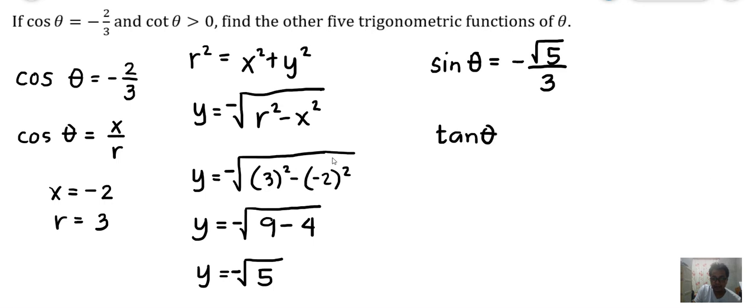Tangent of θ is y/x = -√5/(-2). You see both y and x are negative, so we can actually write it as positive: √5/2.